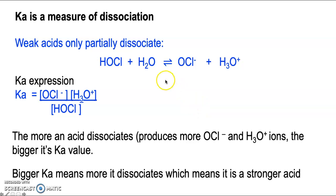Now the more an acid dissociates, which means donates its protons, then you'll get a higher concentration of the OCl- ions and the hydroniums. If you've got larger values on the top of this expression, you'll get a larger Ka value. So the more an acid dissociates, the larger the Ka.